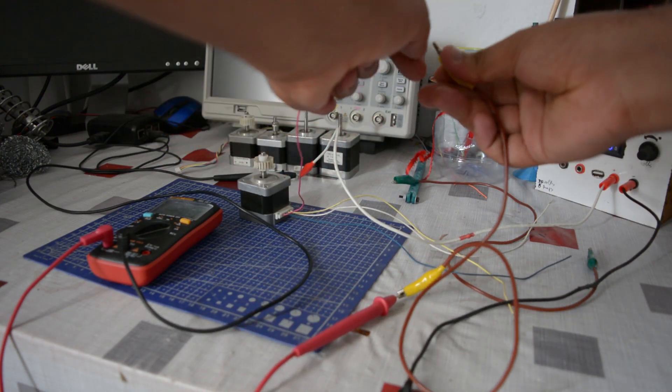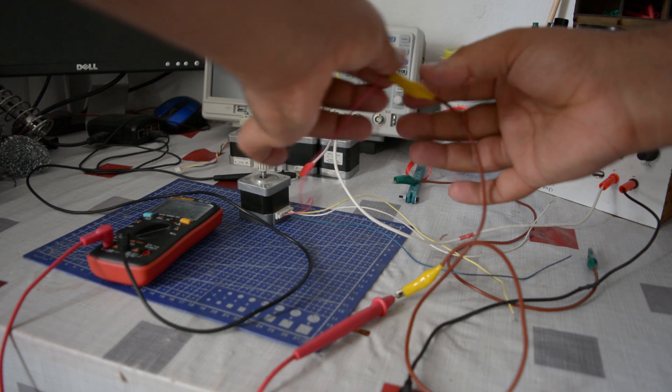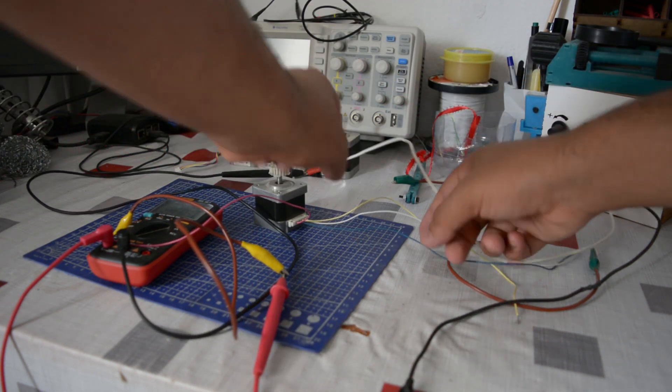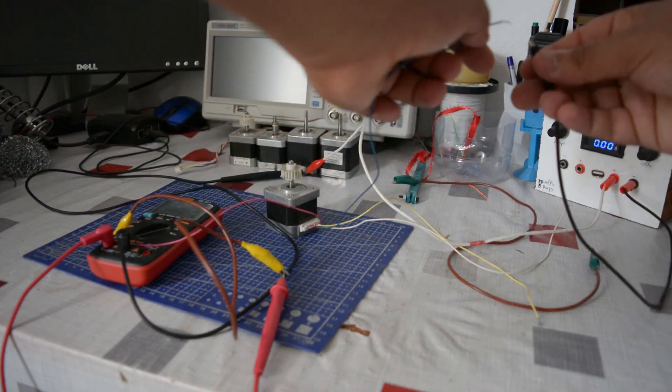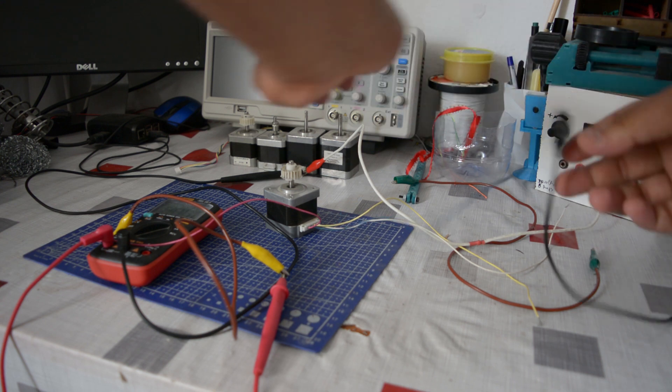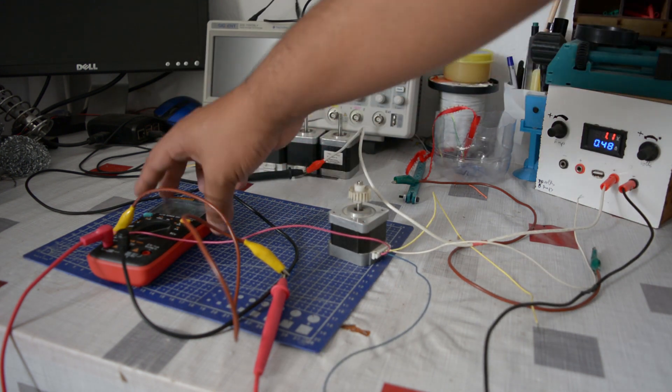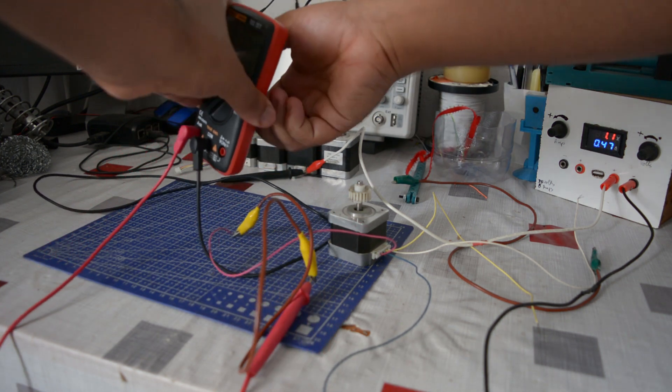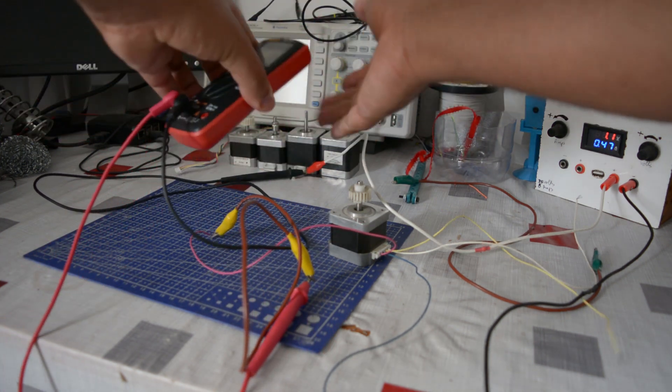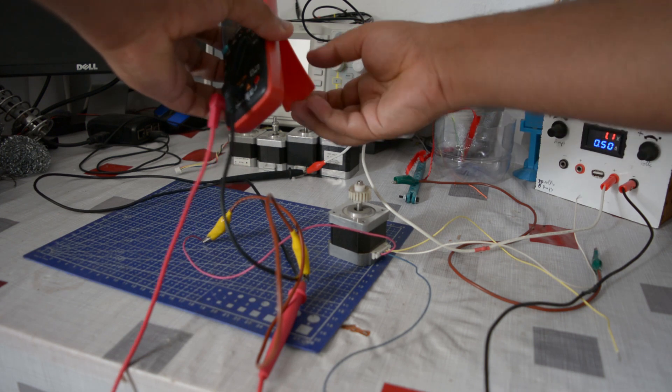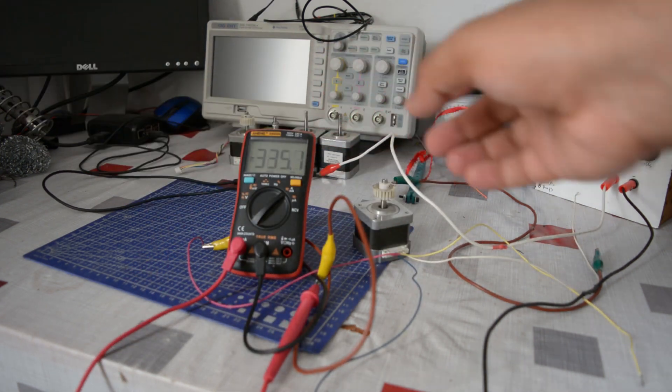For this application, we need a constant current source. You see, the maximum torque we get from the motor is when there is 1.7 amps running through the coil. Of course, this is different from each type of motor. Like for example, on bigger motors, like the NEMA 23, we need more than 1.7 amps. It can even reach 4 amps. That's why we need a bigger motor driver, but this is beyond the scope of this video.